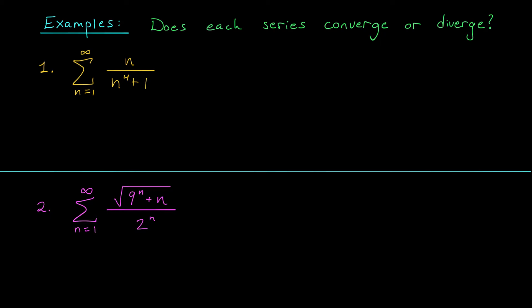To see how this can be done, consider the series in example one. Here we're adding up the terms n over n⁴ plus one, where n ranges from one to infinity. It's not too hard to see that the terms go to zero, so it passes the divergence test. It's not a geometric series and it's not a p-series. This may be something I could integrate, so I'll keep the integral test in the back of my mind. But let's first try to see if we can make a nice, quick comparison with something simpler.